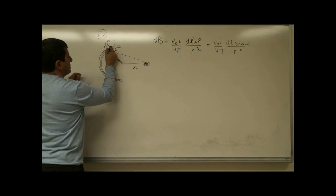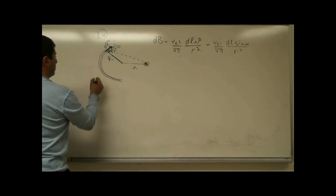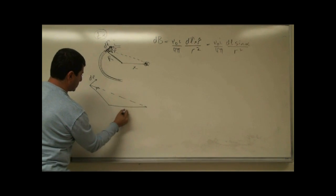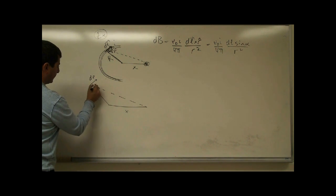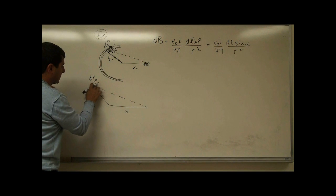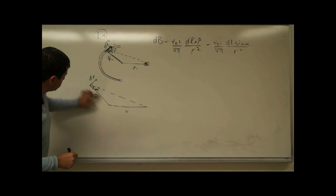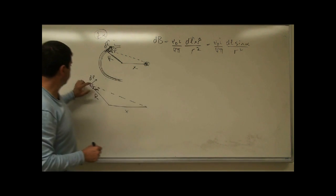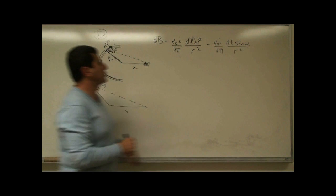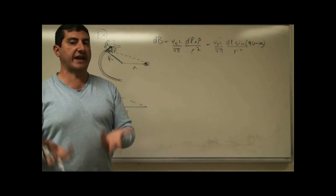If you look at this triangle, it's a 90-degree triangle because one side is the vector pointing to the center. Sine of alpha will equal cosine of the complementary angle. We redefine alpha as this angle in the triangle: dL along the arc, r-hat pointing to the field point, x is the offset distance, r is the distance. So sine of the angle between them — which is 90 minus alpha — equals cosine of alpha. Therefore dB equals mu-zero i over four pi, dl cosine of alpha over r squared.